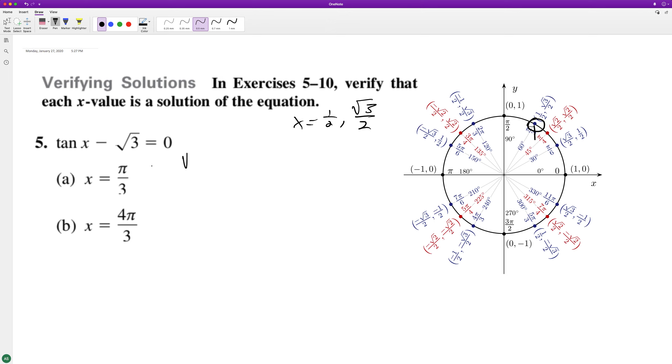So it's going to be root 3 over 2 divided by 1 half, which is the same thing as root 3 over 2 over 2 times 2 over 1. The 2's cancel out so we get root 3, and then root 3 minus root 3 does equal 0. So this verifies and checks out.